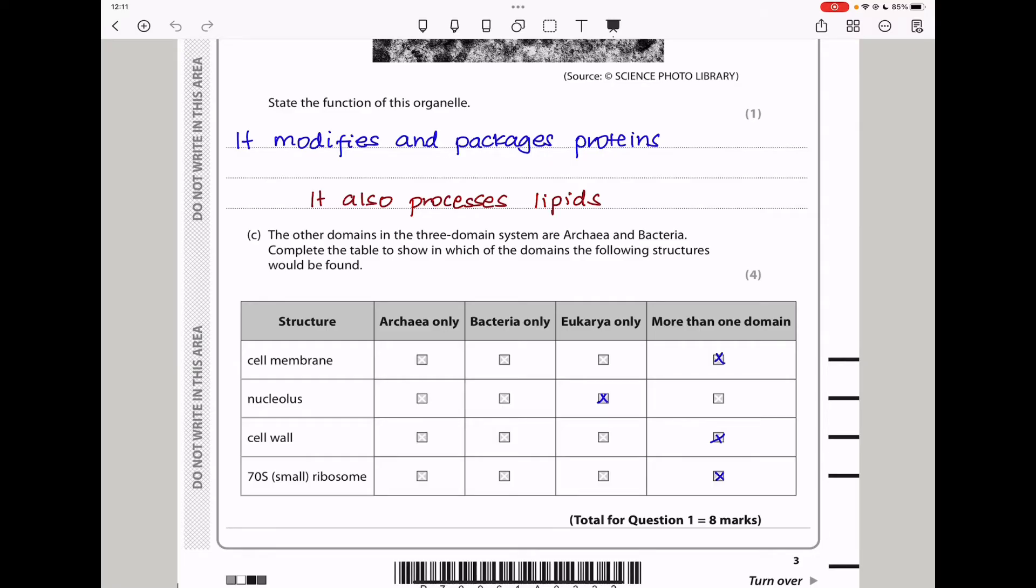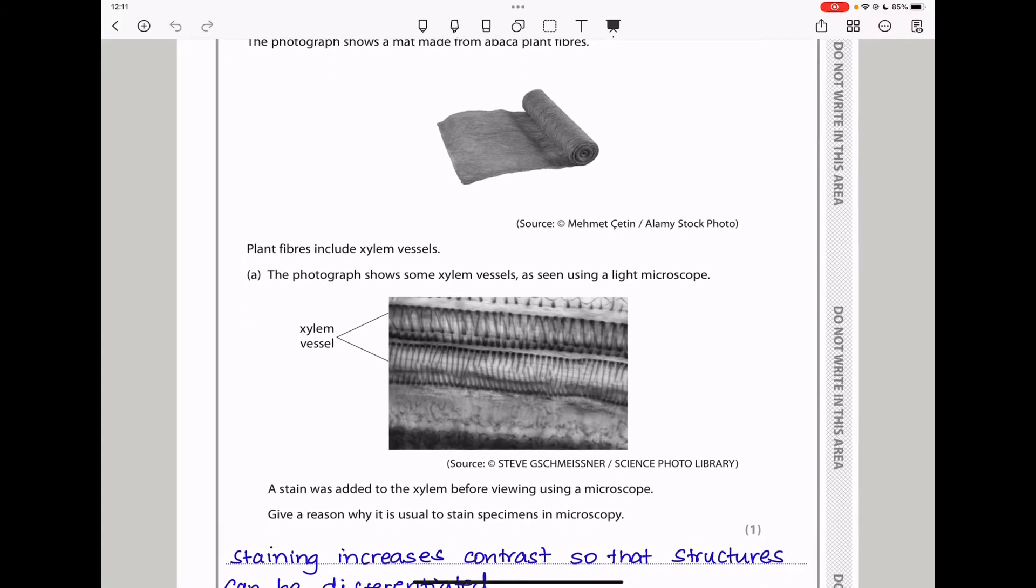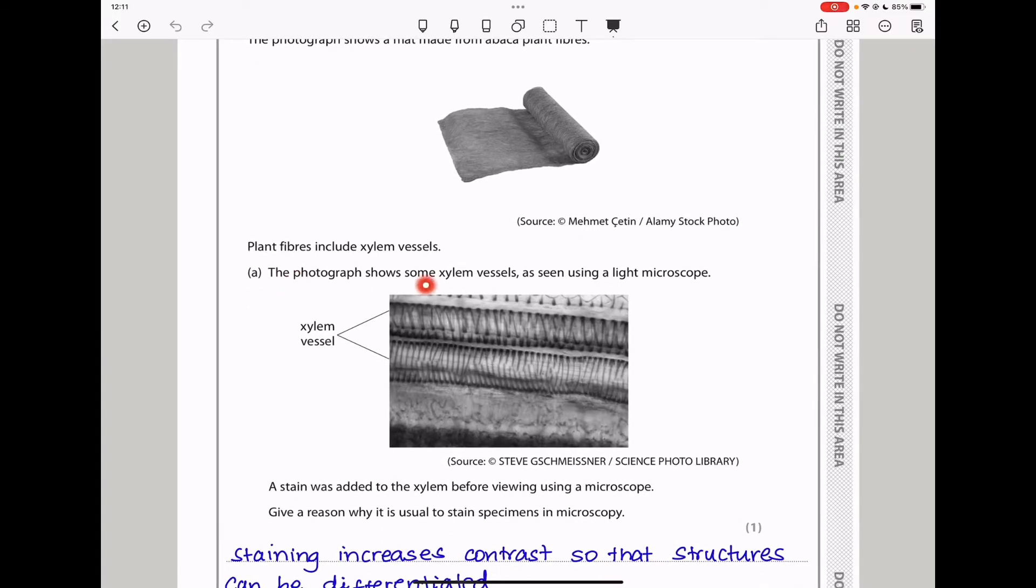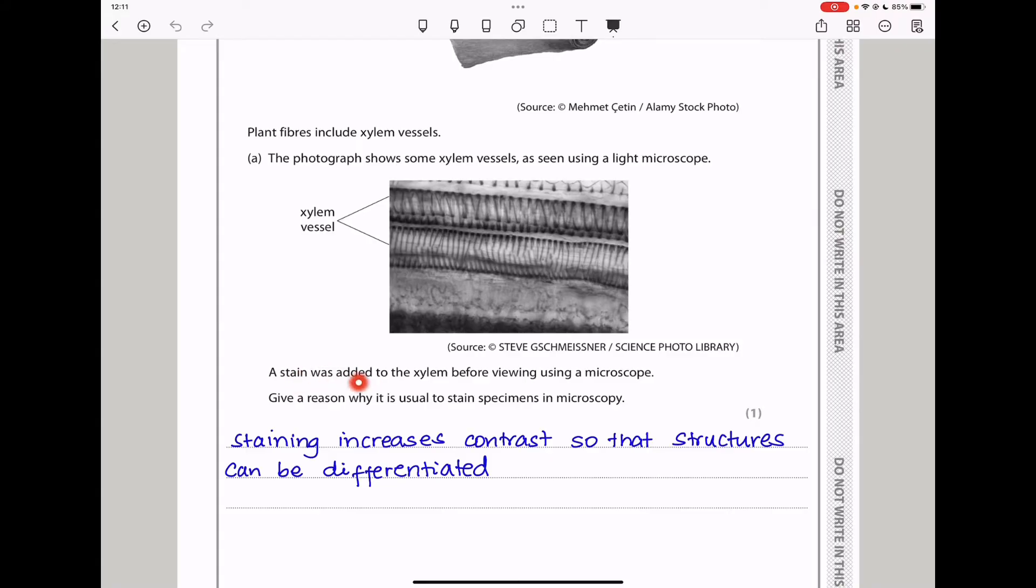Question two. Abaca plants are found in the Philippines. The photograph shows a mat made from abaca plant fibers. This is the mat made from the plant fibers. They say plant fibers include xylem vessels. The photograph shows some xylem vessels as seen using a light microscope. Then they say a stain was added to the xylem before viewing using a microscope. Give a reason why it is usual to stain specimens in microscopy. Staining will increase contrast so that the structures can be seen more clearly under the microscope.